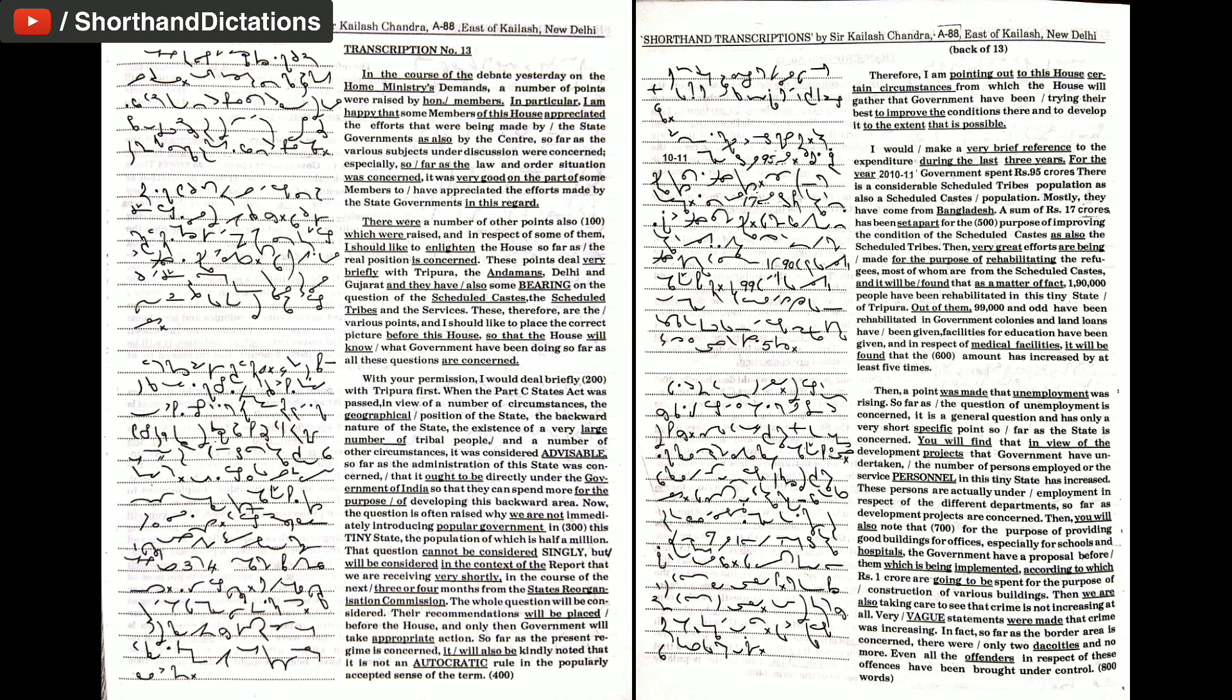When the Part C States Act was passed, in view of a number of circumstances - the geographical position of the state, the backward nature of the state, the existence of a very large number of tribal people and a number of other circumstances - it was considered advisable so far as the administration of this state was concerned that it ought to be directly under the government of India so that they can spend more for the purpose of developing this backward area.